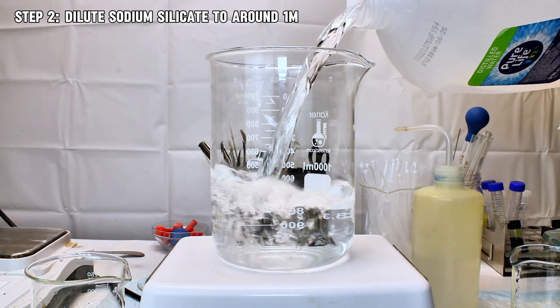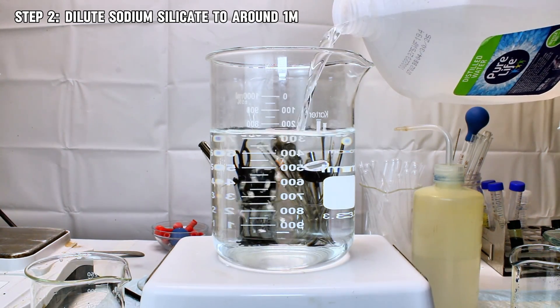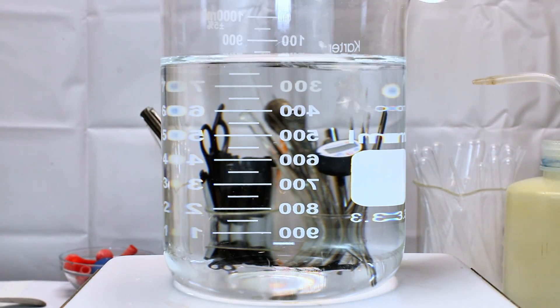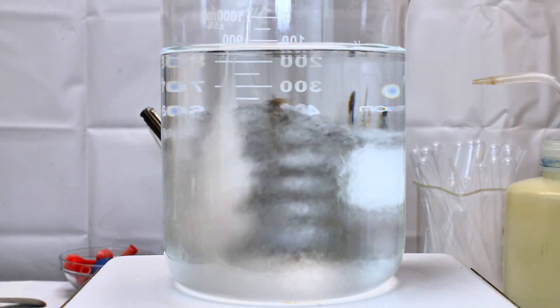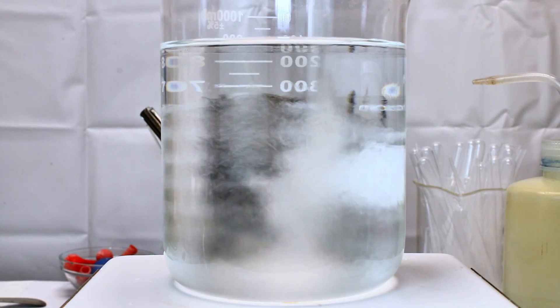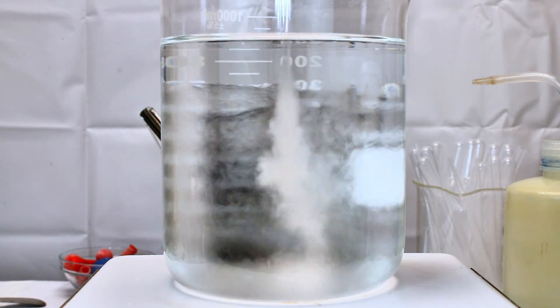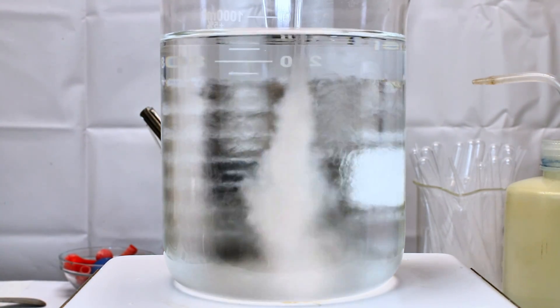This was then poured into 800 milliliters of water to dilute it to an appropriate concentration for this reaction, which gave a very cool effect due to the huge density difference between the two liquids. Once the solution was thoroughly mixed, the hard part was done, and it was time to grow my chemical garden.